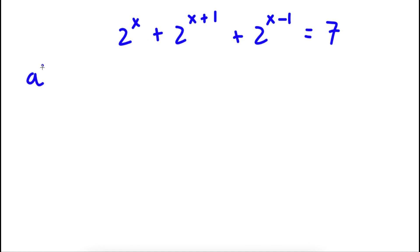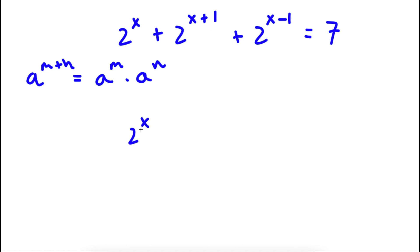Now, if I have something in the form a to the power of m plus n, this is equal to a to the power of m times a to the power of n. So 2 to the power of x plus 1, we can rewrite as 2 to the power of x times 2 to the power of 1.